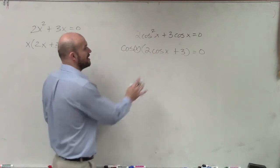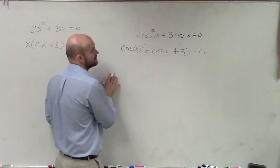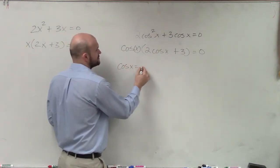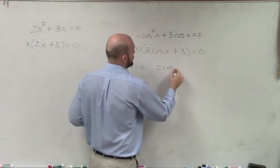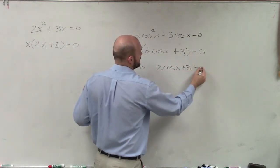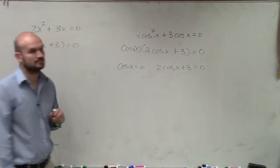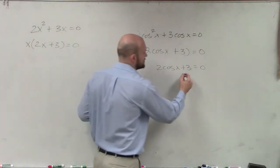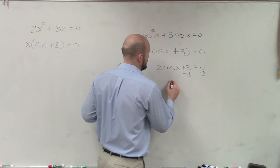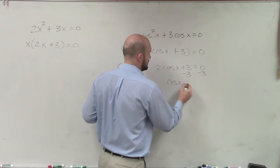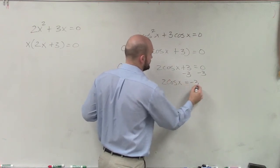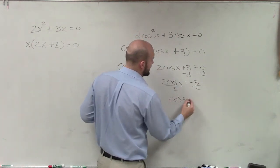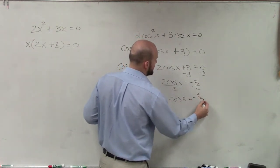Now when we go ahead and do this, I can apply the zero product property. What I'll have is cosine of x equals 0, and then 2 cosine of x plus 3 equals 0. To find all the solutions, I just solve. For the second equation, I solve for negative 3, so 2 cosine of x equals negative 3. Divide by 2, and cosine of x equals negative 3 halves.